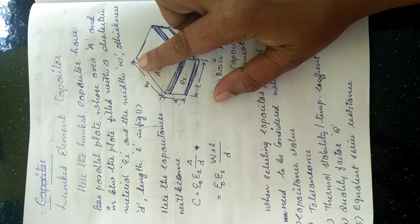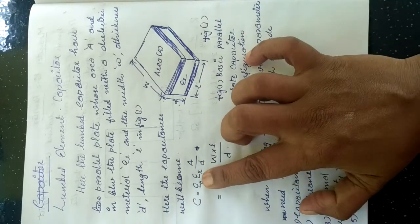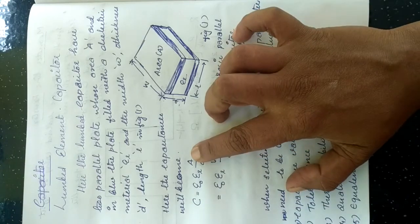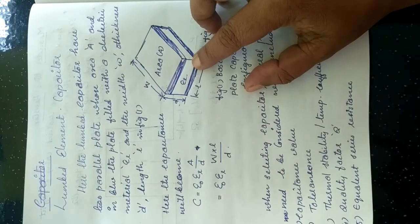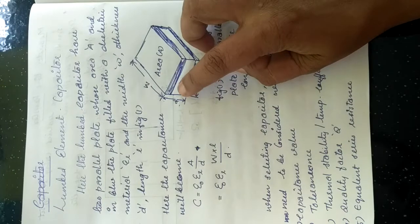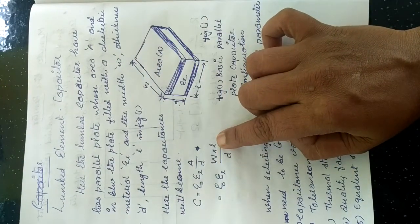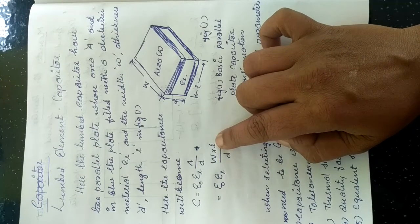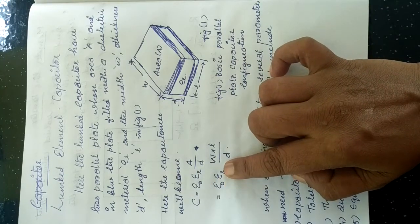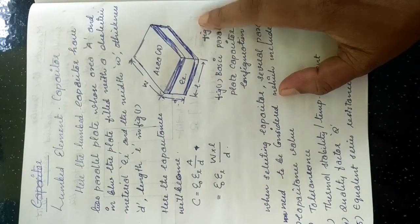The width of the capacitor is W. The capacitance of this parallel plate capacitor is C = ε₀εᵣA/D, where A is the area and D is the distance between the two parallel plates. The area A equals width W multiplied by length L, so the capacitance equation becomes C = ε₀εᵣWL/D. This is the basic parallel plate capacitor configuration.